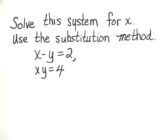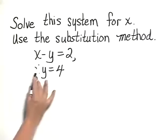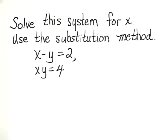Solve this system for x using the substitution method. x minus y equals 2, x times y equals 4.